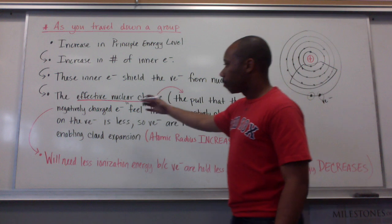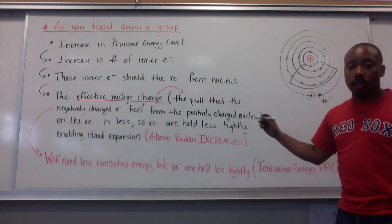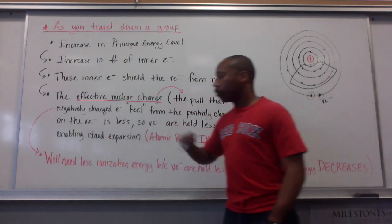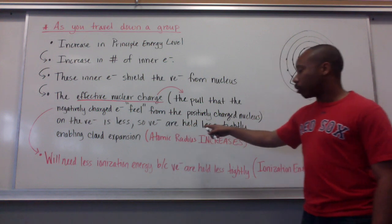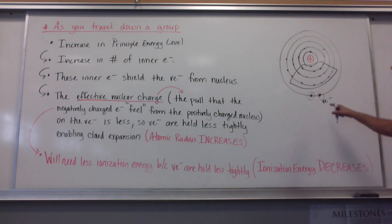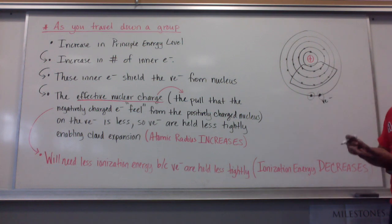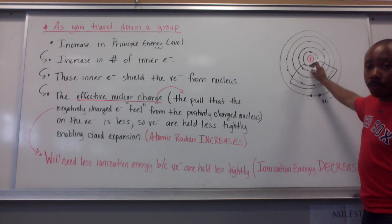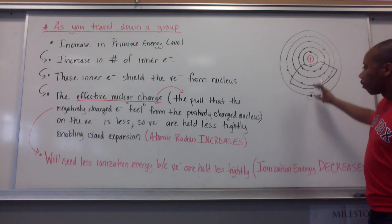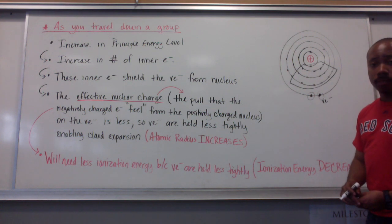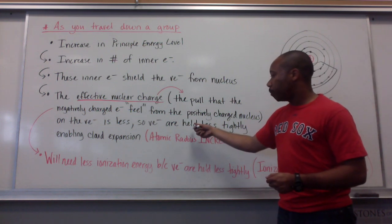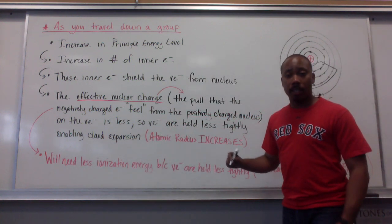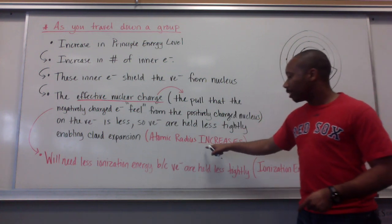All my valence electrons here at the bottom — these inner electrons located between the valence electrons and the nucleus act as a shield. They kind of shield these electrons from the nucleus. What that results in is this: the effective nuclear charge, which is the pull that the negatively charged electrons feel from the positively charged nucleus, is less on the valence electrons. So valence electrons are held less tightly, and it enables my electron cloud to expand. So as you go down a group, your atomic radius will increase.